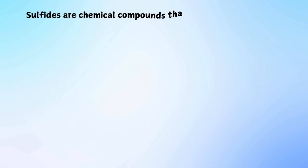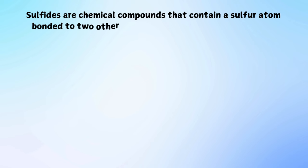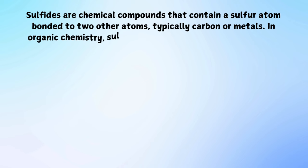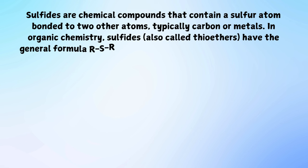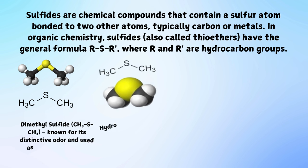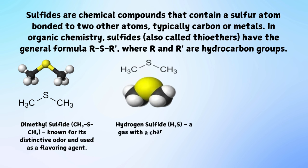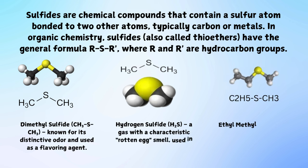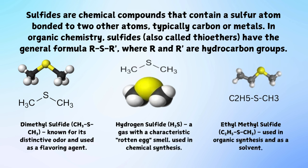Sulfides are chemical compounds that contain a sulfur atom bonded to two other atoms, typically carbon or metals. In organic chemistry, sulfides, also called thioethers, have the general formula R-S-R', where R and R' are hydrocarbon groups. Examples include dimethyl sulfide, known for its distinctive odor and used as a flavoring agent; hydrogen sulfide, a gas with a characteristic rotten egg smell used in chemical synthesis; and ethyl methyl sulfide, used in organic synthesis and as a solvent.